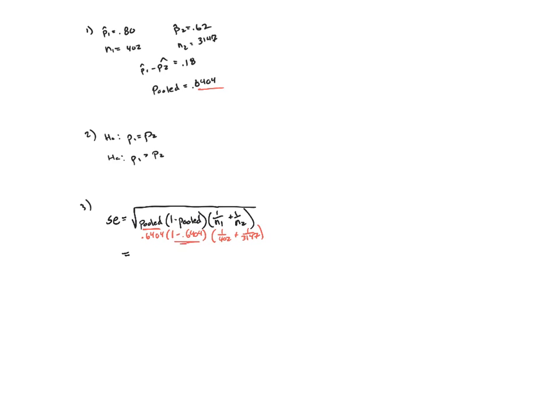I highly suggest you simplify at least this portion before you plug into your calculator just to prevent yourself from making silly mistakes. Once you've calculated this, you should get out, for your SE, 0.0254.